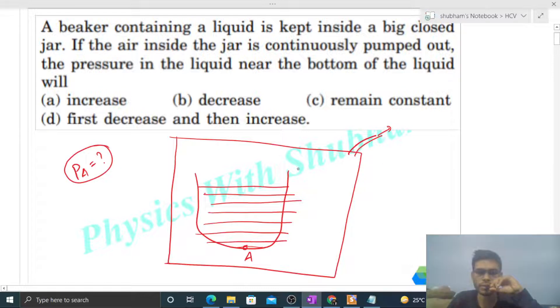Let's say pressure inside the jar is p₀. Then pressure at point A—let's say ye jo height hai is liquid ka, that is h—so pressure at point A will be p₀ plus ρ into g into h.